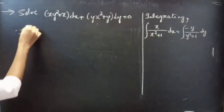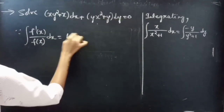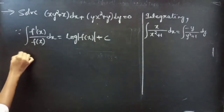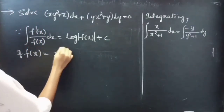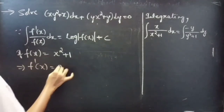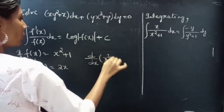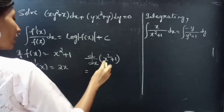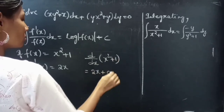We know that ∫ f′(x)/f(x) dx = log|f(x)| + c. If f(x) = x² + 1, then f′(x) = 2x — the derivative of x² + 1 with respect to x is 2x + 0 = 2x.